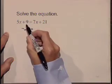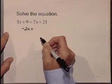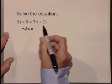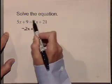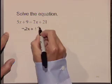At the same time, let's move the 9 to the right by subtracting 9 from both sides. As we subtract the 9 from the left, it cancels, and on the right, 21 minus 9 is 12.